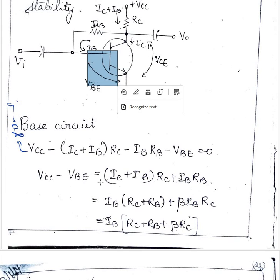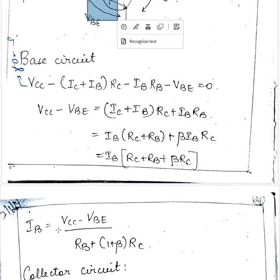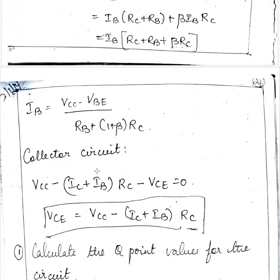So on rearranging we get VCC minus VBE equal to IB into RB plus RC plus beta RC and IB is VCC minus VBE by RB plus 1 plus beta RC.